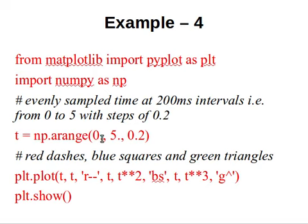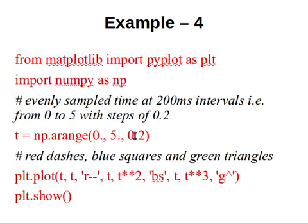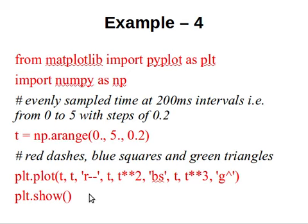I am using numpy as np. np.arange is a numpy function that automatically creates a linear array. The first argument is the start and the second is the end value. I have written 0. and 5. with decimal points to treat them as floating point numbers. The third argument is the step — so starting from 0, numbers will be generated as 0, 0.2, 0.4, 0.6, 0.8, and so on up to 5. This array is stored in variable T. Then I use the plot function again.